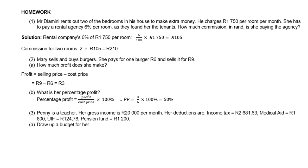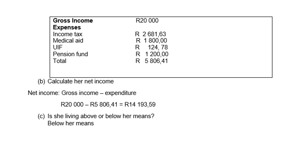Penny is a teacher. Her gross income is 20,000 rand. Drawing up a budget, the total deductions come to 5,806.41 rand. Net income will be 20,000 minus 5,806.41, so her net income is 14,193.59 rand. Is she living above or below her means? She is definitely living below her means because her expenditure is less than her income.